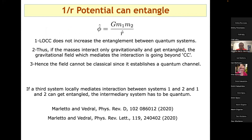The gravitational field establishes a quantum channel between the two masses, so gravity must be quantum. This is complemented by theorems proved in related papers: if a third system locally mediates an interaction between systems one and two, and the two get entangled through it, then the intermediary system must have quantum degrees of freedom. This logic is what's typically used to argue that gravity-induced entanglement, if found, would prove the quantum nature of gravity.